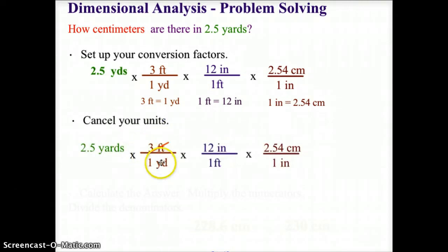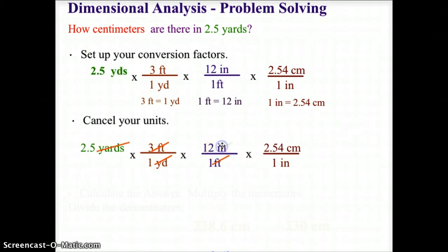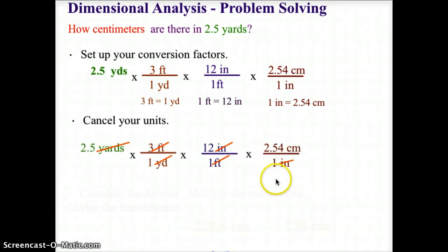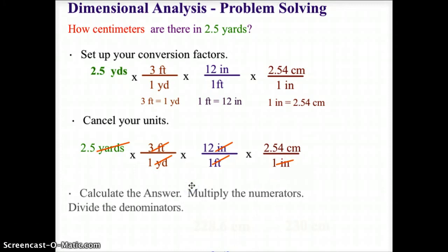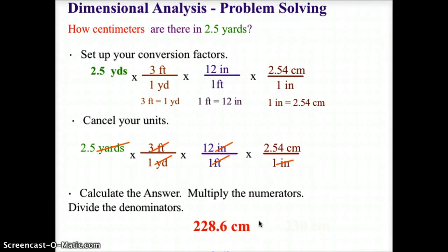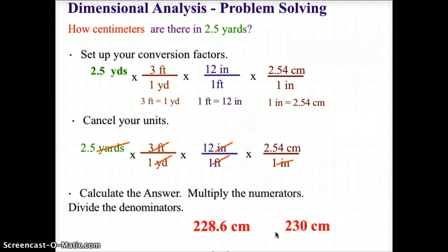Go ahead and cancel your units: yards cancels with yards, feet cancels with feet, inches cancels with inches, and we end up with only centimeters as our final unit. Multiplying all the numerators and dividing any denominators gives us 228.6 centimeters. But our original question only had two significant digits, so we round to 230 centimeters following significant digit rules.